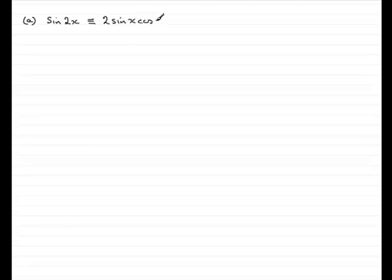The first part of this question asks us to write sin(2x) in terms of sin(x) and cos(x). You should know this identity — you've got to learn it — and it is equal to 2sin(x)cos(x). You could write 2cos(x)sin(x); obviously it doesn't matter which way round you write it. But for one mark, that's what we have.